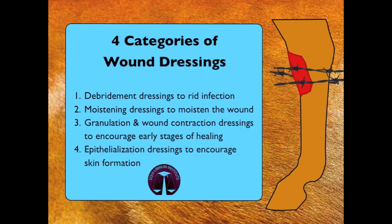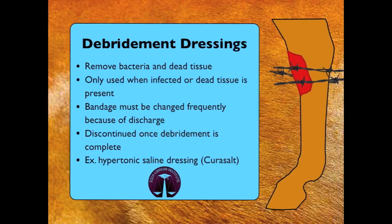There are four basic categories of wound dressings: debridement dressings, moistening dressings, granulation and wound contraction dressings, and epithelialization dressings. Debridement dressings assist the wound by removing necrotic material and bacteria from the surface, but should only be used when infected or dead tissue is present, as they will indiscriminately remove the top layer of the wound. These bandages must be changed frequently because of wound discharge and discontinued once necrotic tissue and bacteria have been removed. An example of a debridement dressing is hypertonic saline dressing, such as CuraSalt.